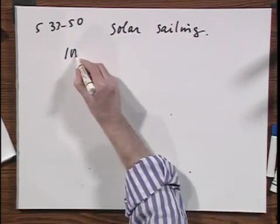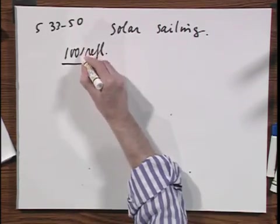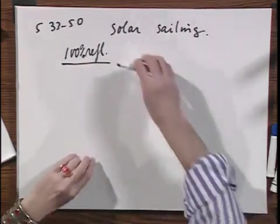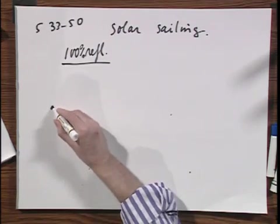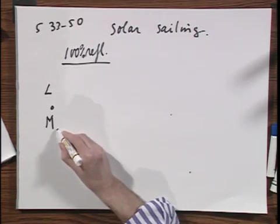We use a 100% reflecting sail, 100% because we want twice the momentum that we would have with full absorption. Here is the sun, luminosity of the sun, this is the mass of the sun.